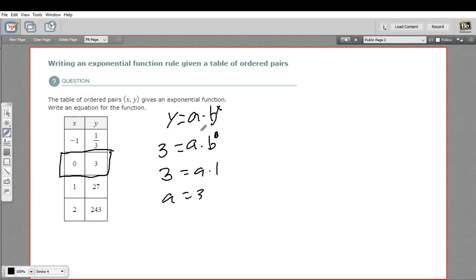So we've actually found our a. So let's rewrite this: y equals 3 times some other number to the x. Now we can choose another one of these points, plug in the x and y values, and see if we can solve for b. Let's try this one. This one looks pretty simple. We've got x is 1.